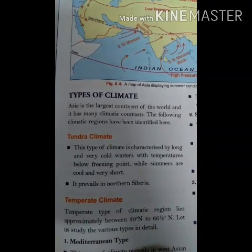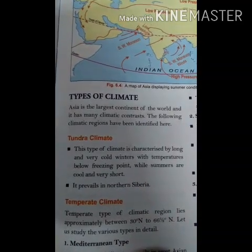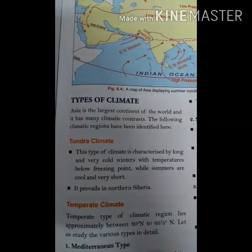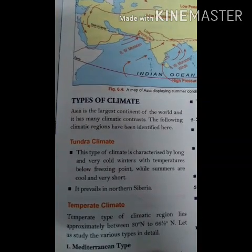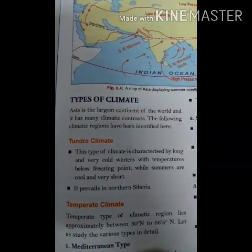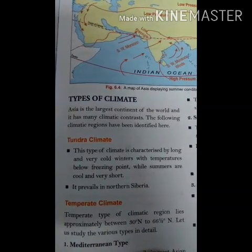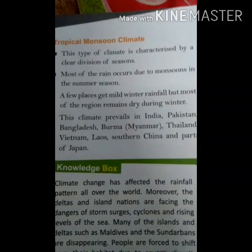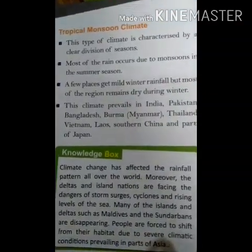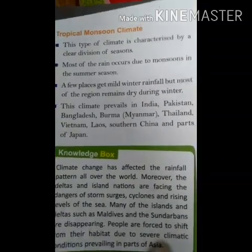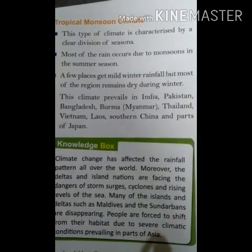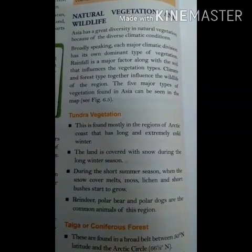Tundra climate has very long and very cold winters with temperatures below freezing point. Summers are cool and very short. This type of climate is found in northern Siberia. Tropical monsoon climate brings most of the rain during the summer season between April and August, and is found in India, Pakistan, Bangladesh, Myanmar, Thailand, southern China, and parts of Japan.